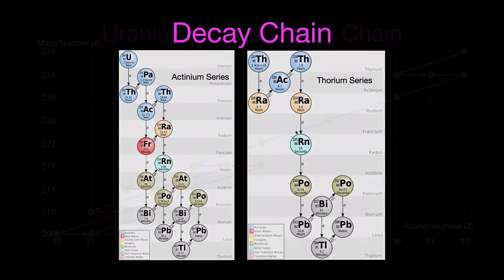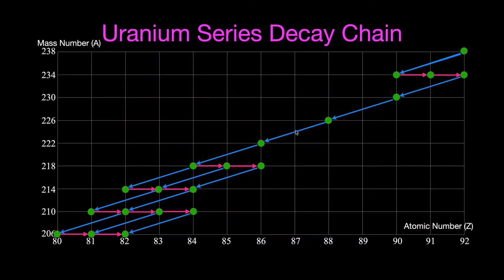There's another way you might see a decay chain represented — on a diagram like this. This is the uranium decay chain diagram. It looks like a graph but it's not really a graph. On the y-axis we have the mass number, abbreviated A. The mass number is the number of protons and neutrons in the nucleus. The mass numbers increase by four as you go up: 206, 210, 214, 218 all the way up to 238. You'll see in a moment why that is.